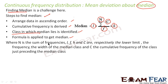First, we arrange data in ascending order. Once that is done, we find the cumulative frequency. Once we have the cumulative frequency, we find the class in which the median lies — we can do this because we have n. We take the n/2 value and find the class in which the median lies.